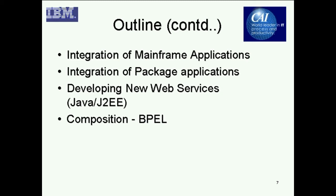The outline continues. The book contains a separate chapter on mainframe application integration, describing different techniques and approaches to integrate mainframe applications with the rest of the enterprise. We will also talk about integration of package applications such as CRM applications from SAP. Then we move to more modern applications and cover how to develop new web services based on Java or J2EE. Finally, a very important part of services-based integration is business process integration, done through BPEL — Business Process Execution Language — and how business processes differ from simple services.